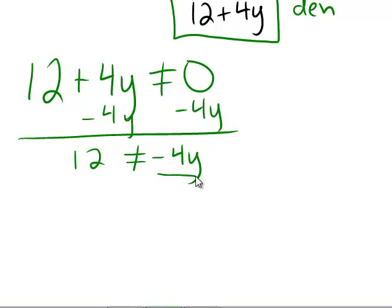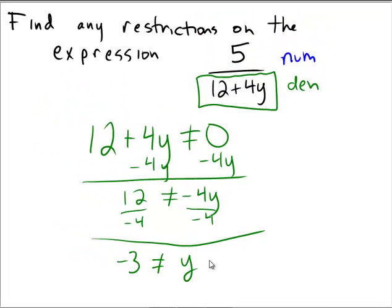Now, how do I get rid of this multiplication? Let's divide by negative 4. And now I can see that negative 3 better not be equal to the variable y.